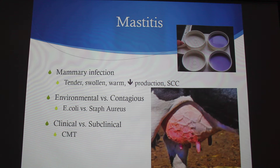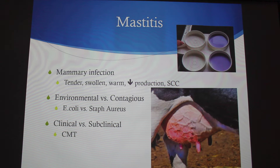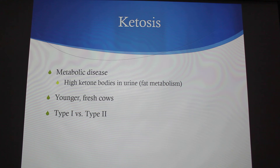Instead, you look for drops in milk production during main stress moments — fresh and peak lactation. You can also measure the conductivity of your milk, since most automatic milkers measure an electrical current through it. Sodium chloride levels are a huge indicator of disease as well.